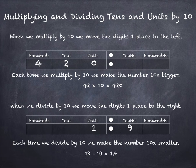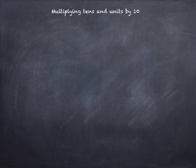19 divided by 10 is 1.9. Let's have a closer look at multiplying tens and units by 10.